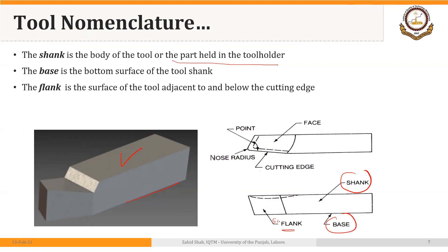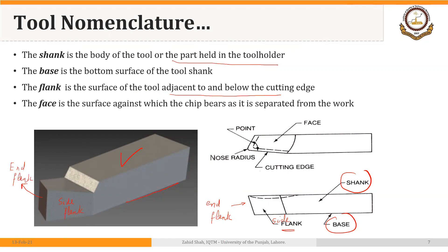The surface adjacent to and below the cutting edge on the side is the side flank, and there is another surface adjacent to and below the cutting edge on the front, which is called the end flank. So we have a side flank and an end flank. Finally, we have the face — the surface against which the chip bears as it is separated from the work. And the cutting edge is the overall cutting portion of the tool.